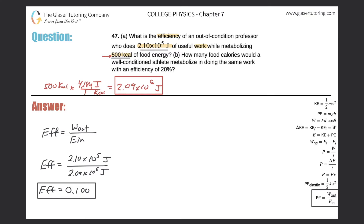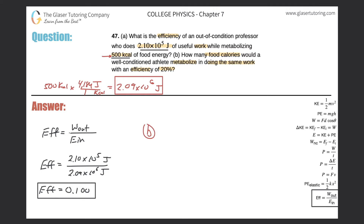Letter B: How many food calories would a well-conditioned athlete metabolize doing the same work with an efficiency of 20%? It's basically the same formula we used, we're just solving for a different variable. For letter B, the efficiency equals the work put out divided by the energy put in. We are solving for the energy put into the system. The efficiency is 20%, which we convert to a decimal: 0.2.